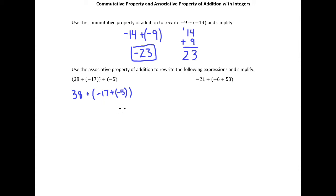And now we can go ahead and simplify -17 plus -5. Of course, we're adding the absolute values. And so we end up with 38 plus -22. And then the signs are different there, so we'll subtract the absolute values.